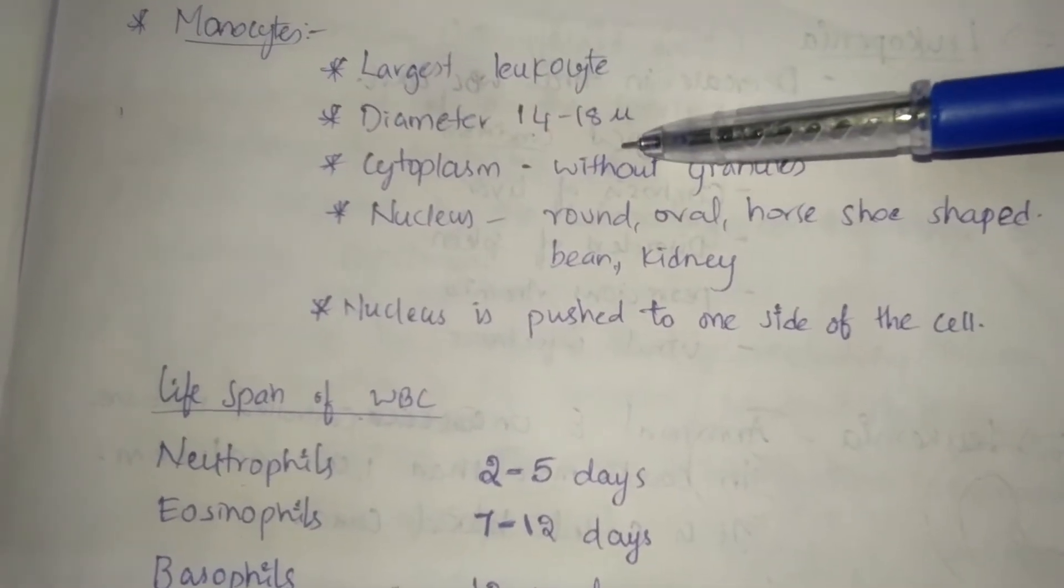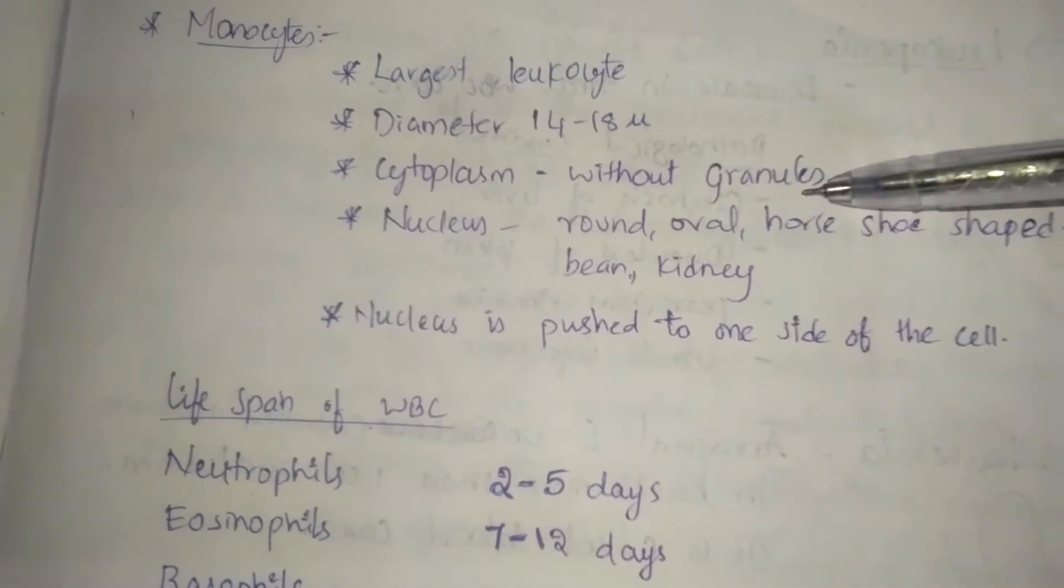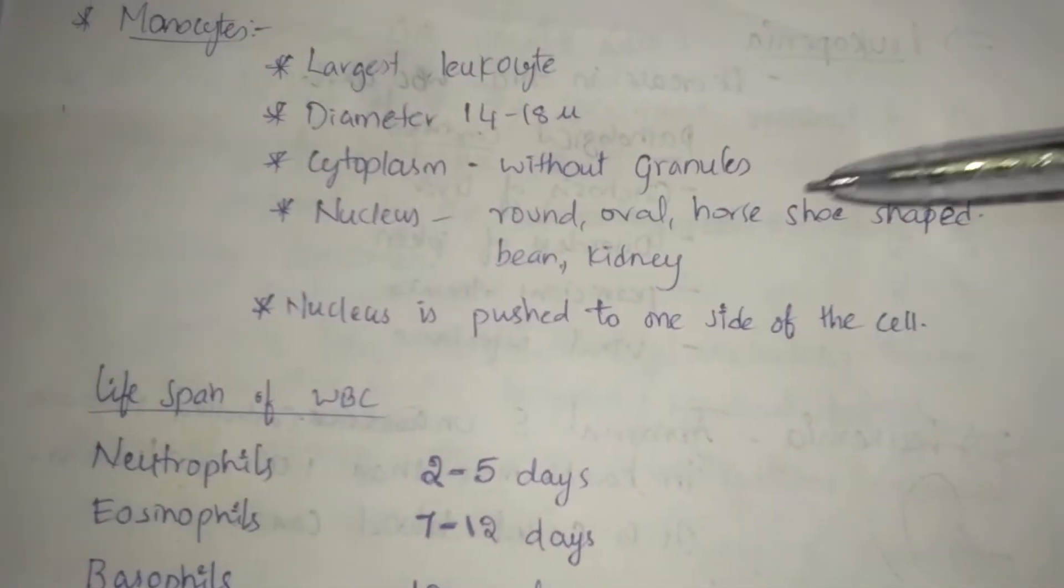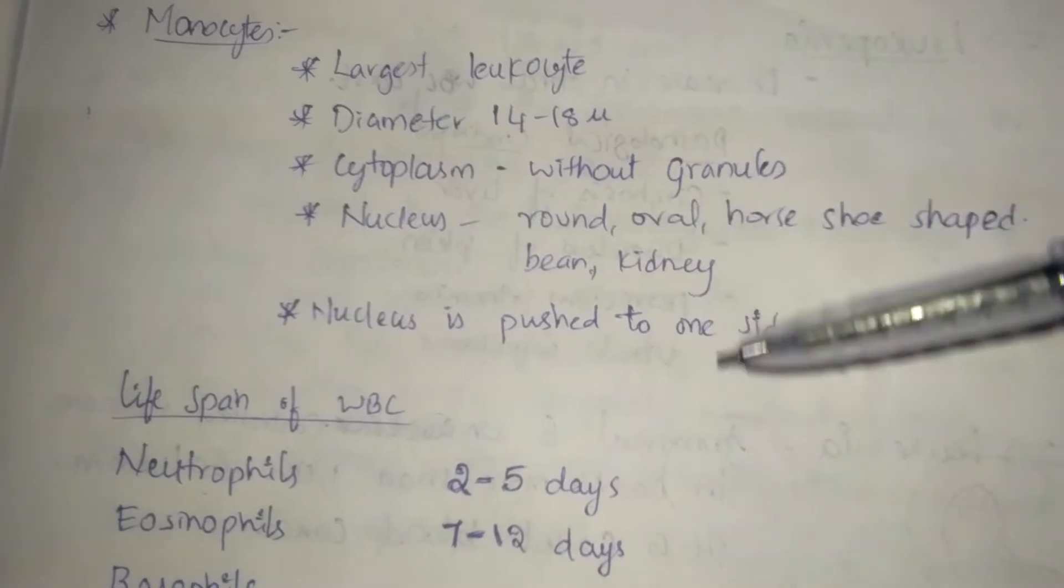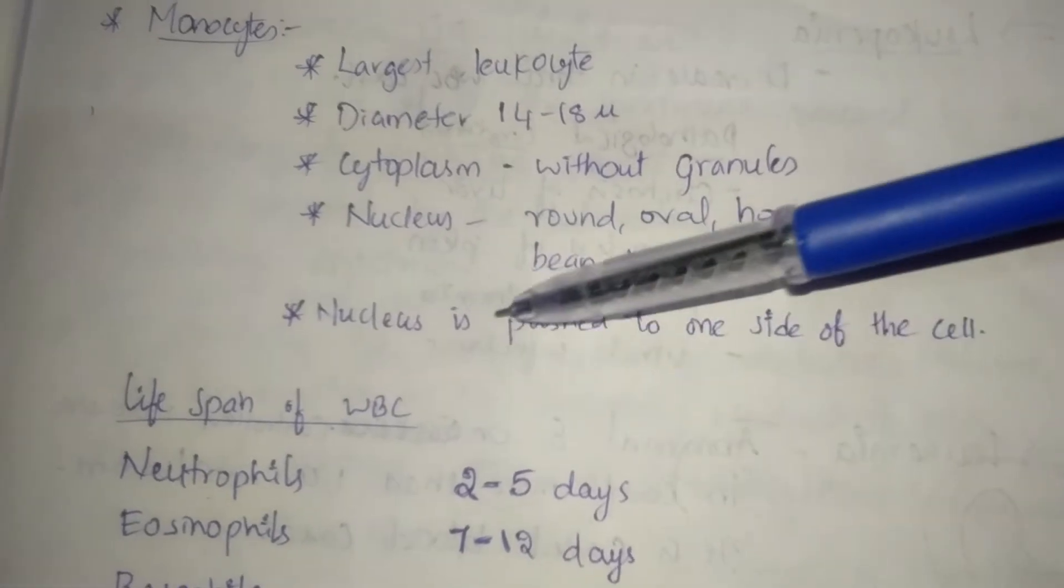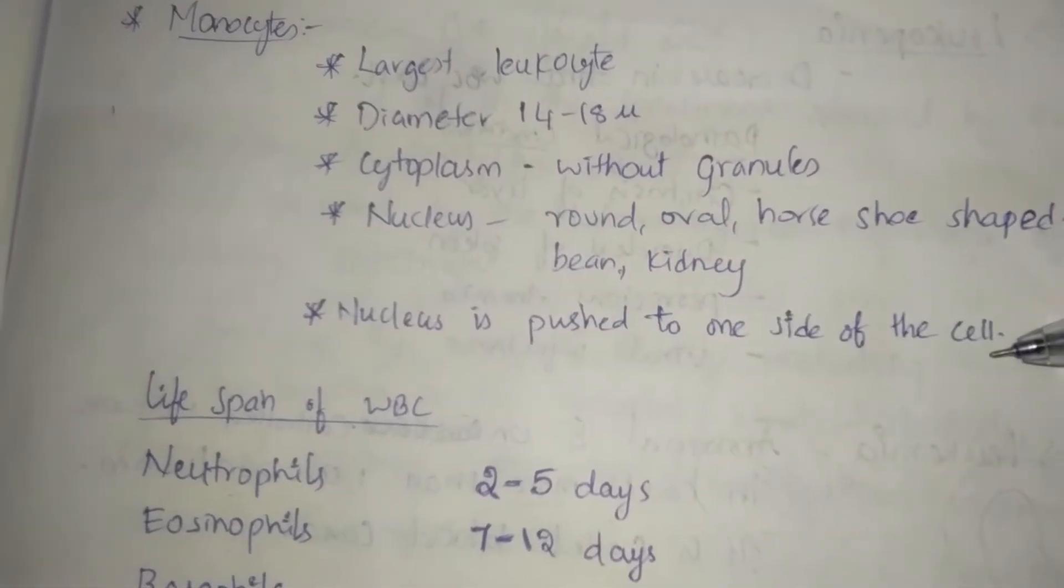Monocytes: Diameter 14 to 18 microns, cytoplasm without granules. Nucleus is round, oval, horseshoe shape or kidney shape or bean shape. Nucleus is pushed to one side of the cell.